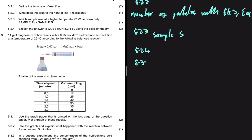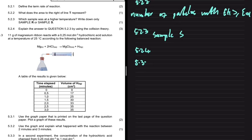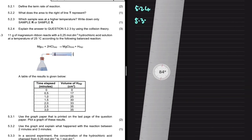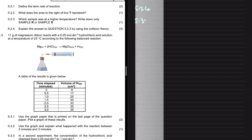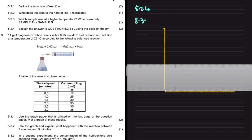For 5.3, 11 grams of magnesium ribbon reacts with 0.25 moles per decimetre cube of hydrochloric acid solution at 25 degrees Celsius, according to the given balanced equation. A table of results is provided. The first question asks us to plot a graph using the graph paper. Let's set up our axes — we have a y-axis and an x-axis.